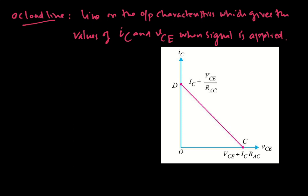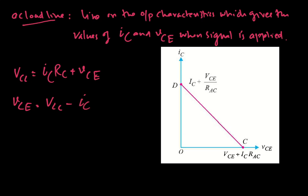When the signal is applied, VCC = IC × RC + VCE, so VCE = VCC − IC × RC. This VCE and IC relationship is linear and can be plotted on the output characteristics as a straight line.